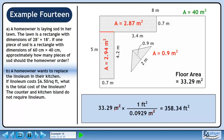33.29 divided by 0.0929 is 358.34. The units of square meters cancel out, leaving square feet.